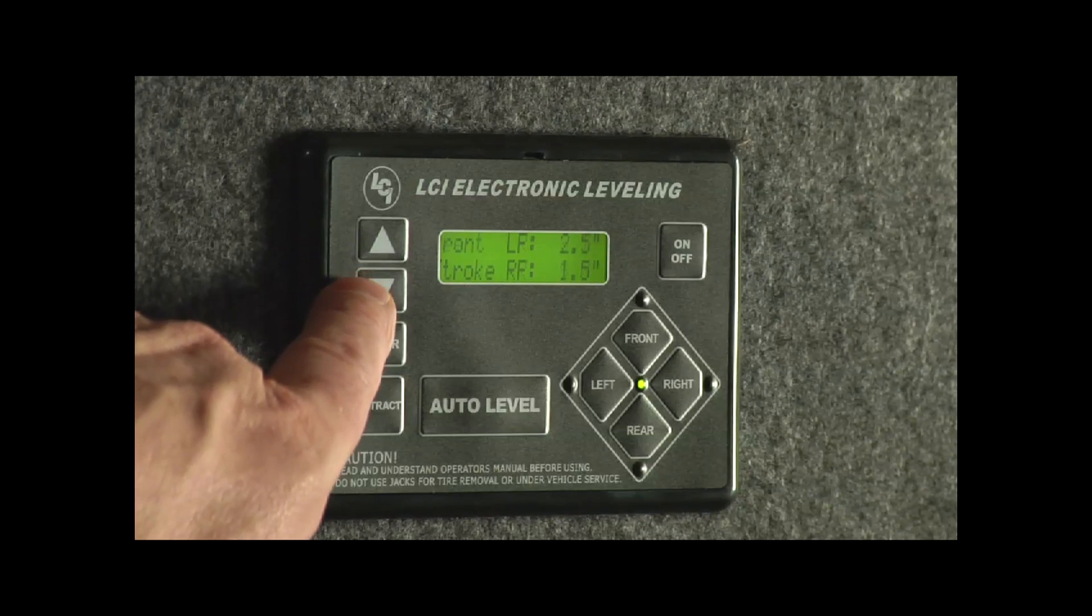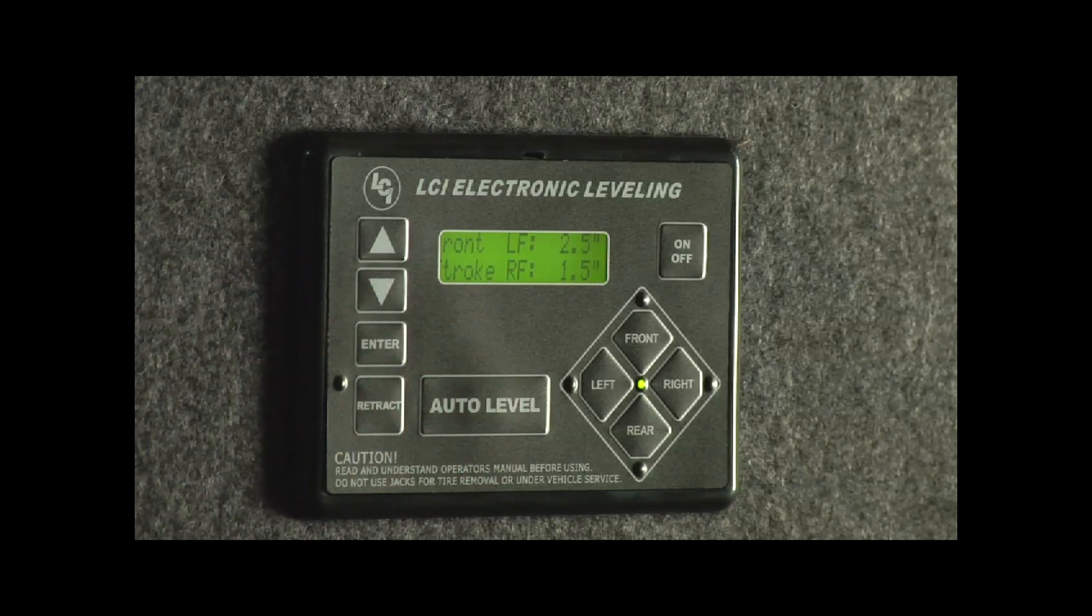Our next screen is going to show us our front jacks, how far those front jacks are stroked. You got two inches on the left front and 1.5 on the right. Remember that's what this system does. It tells you how far you're traveling to level. That's what those things are for.